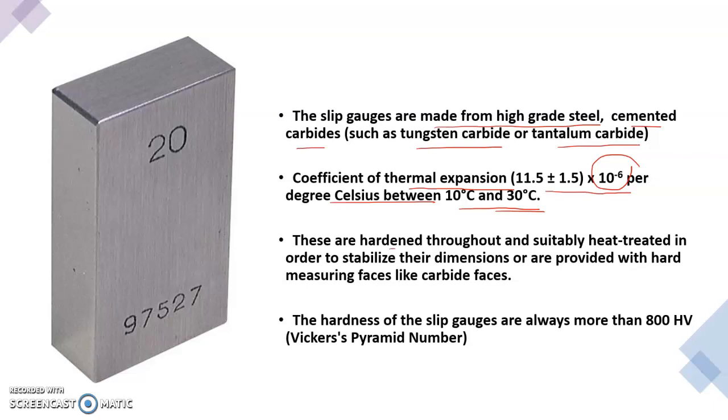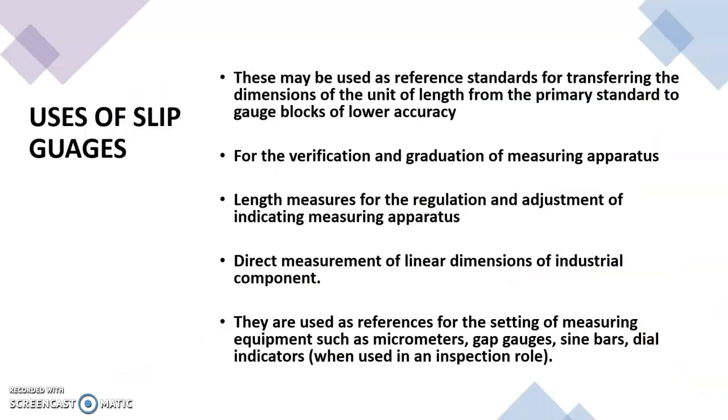These are hardened throughout and suitably heat treated in order to stabilize their dimensions and are provided with hard measuring faces like carbide faces. The hardness will be in the range of 800 HV, Vickers pyramid number, the standard of hardness.